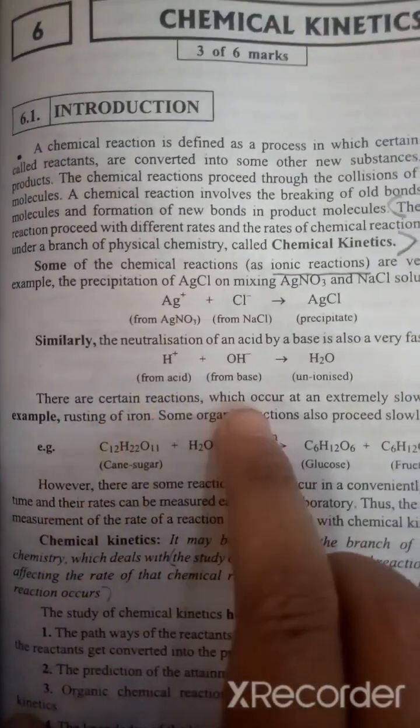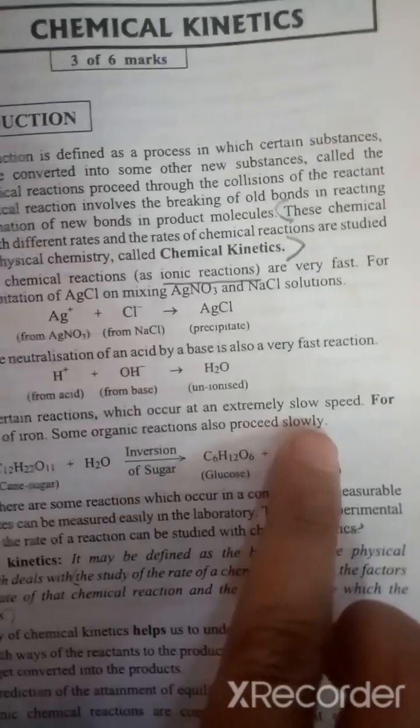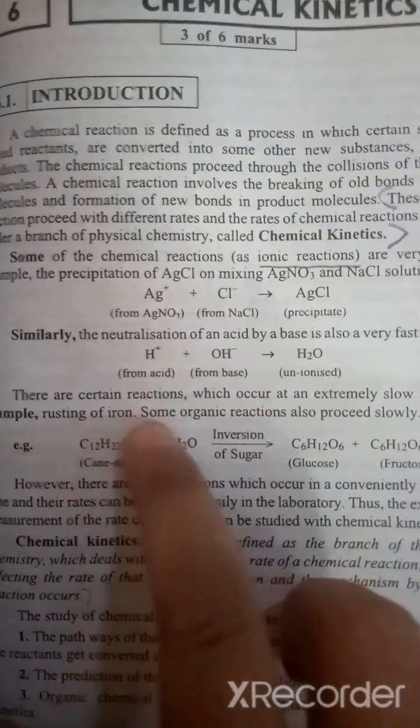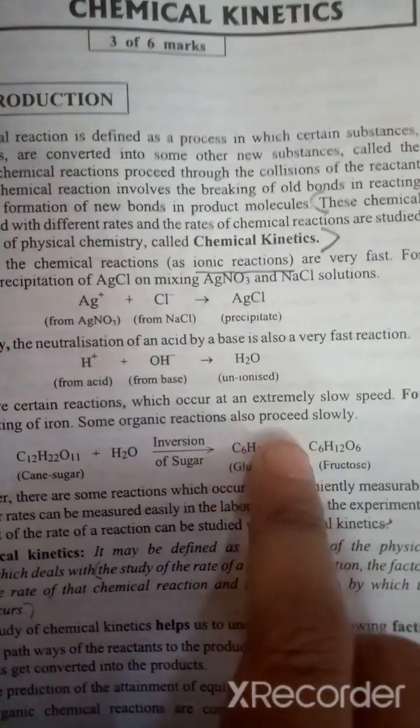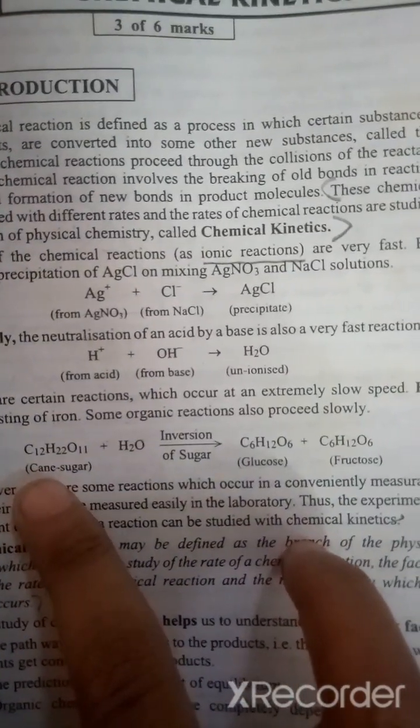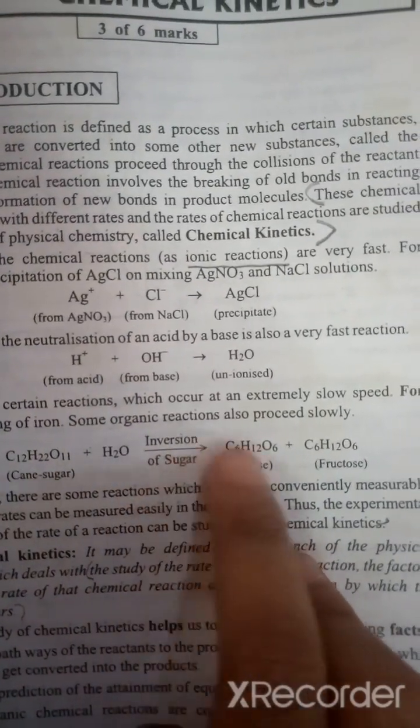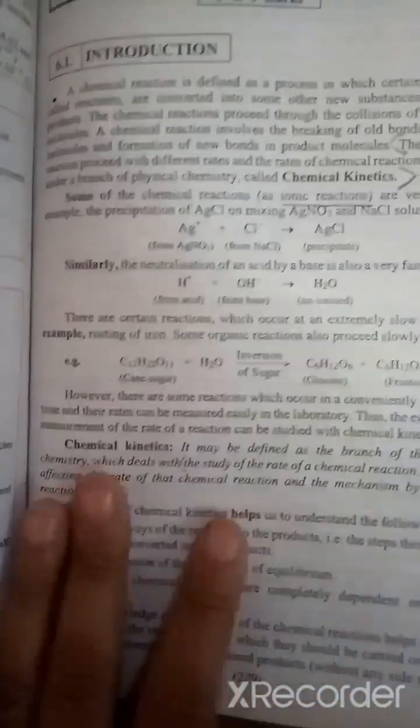But there are certain reactions which occur at extremely slow speed. For example, rusting of iron. Some organic reactions proceed slowly. The inversion of sugar, where glucose or fructose is made by water.